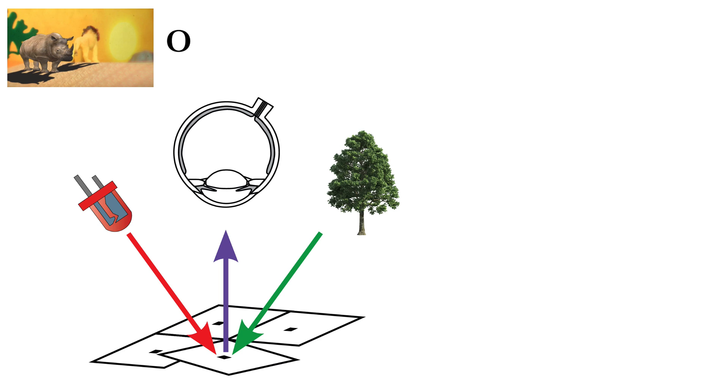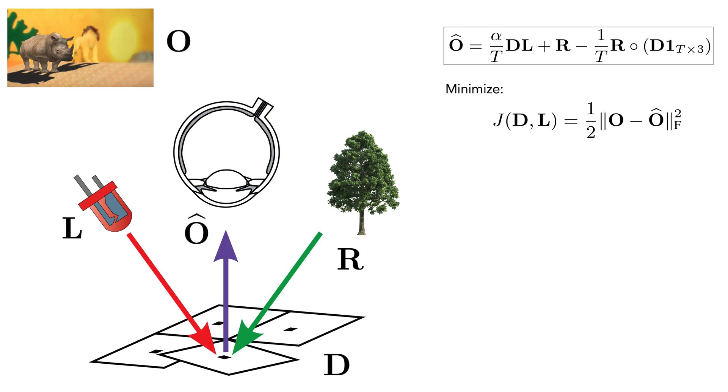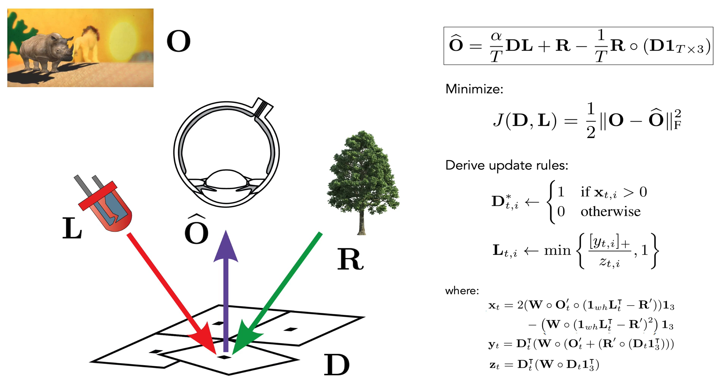We first derived an image formation model, O hat, which mathematically describes the image that the user observes as a combination of the physical scene, R, modulated by the DMD states, D, and the temporally varying LED colors and intensities, L. We formulate this as an objective function and derive a set of update rules, which we use to iteratively converge towards the target composition. I refer you to our paper for full derivations of this.